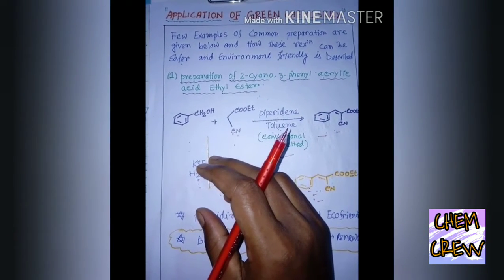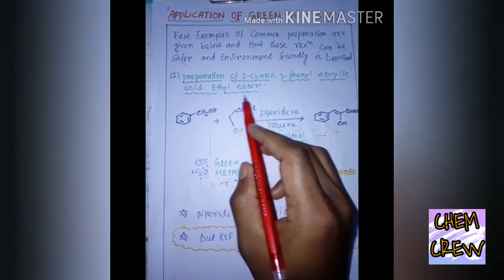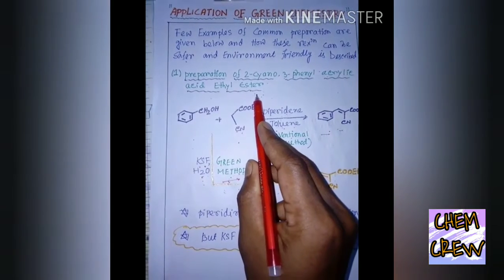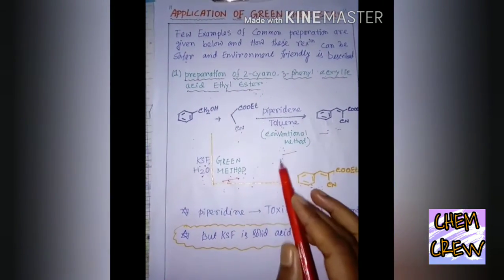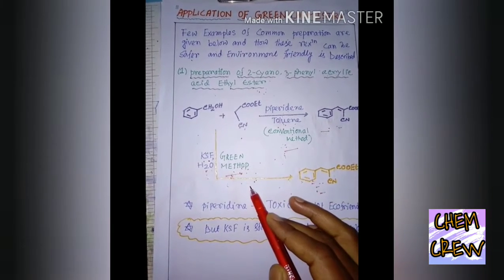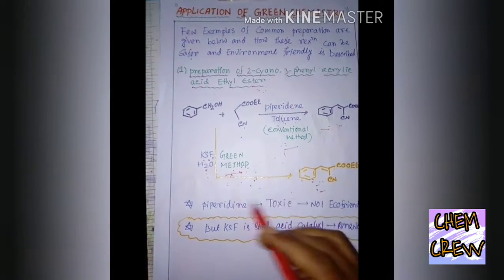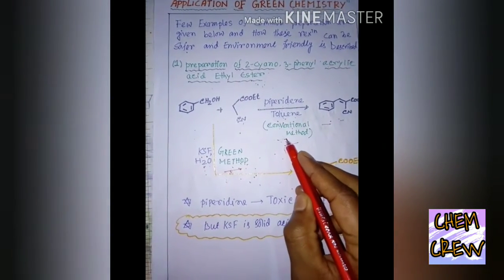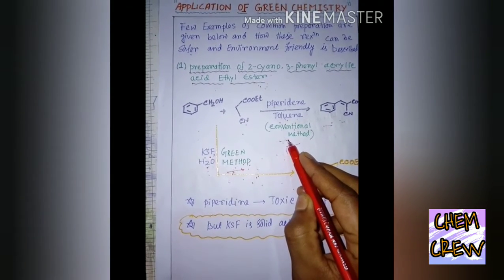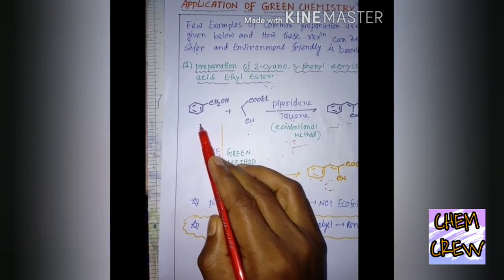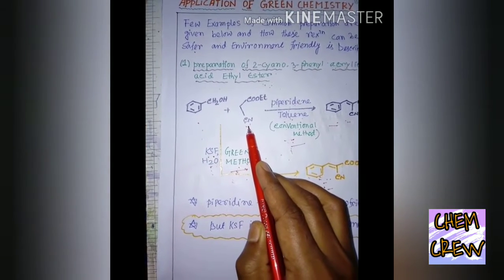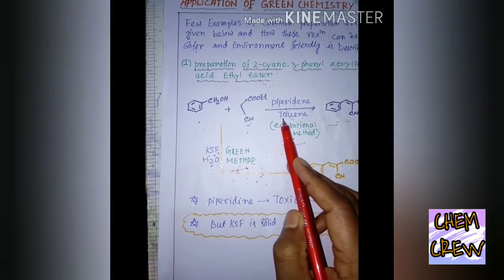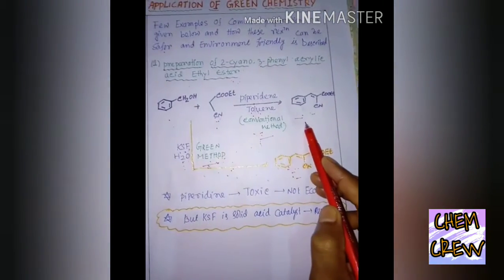First example of green synthetic chemistry is preparation of 2-cyano-3-phenyl-alkyl-acid ethyl-ester. Here, I will tell every reaction in two types of method and then we consider which one is better. In the conventional method, we are taking benzyl alcohol and it is treated with this. In the presence of piperidine and toluene,